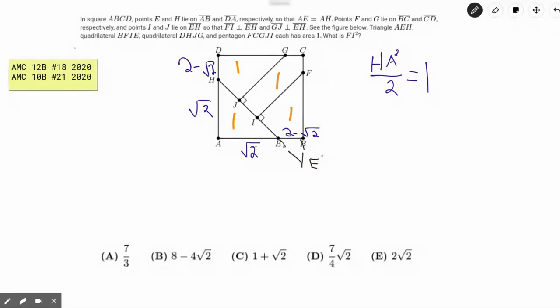And we can actually know that EB prime is an isosceles right triangle as well. That is because we know AB is perpendicular to this BC extension, and we also know that angle AEH is reflected across to angle BEE prime because of vertical angles. So from that, we know that BE prime also has a length of 2 minus √2.